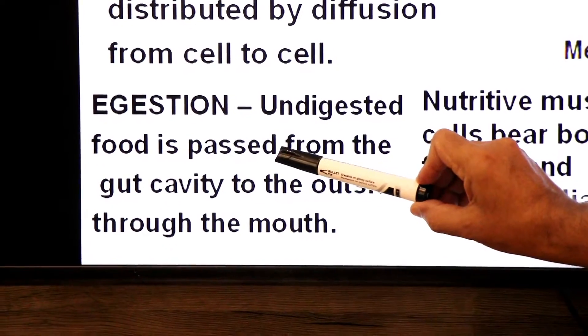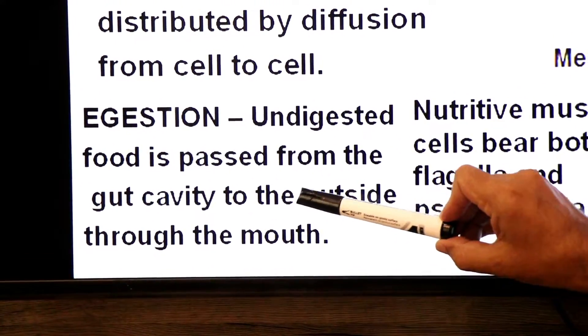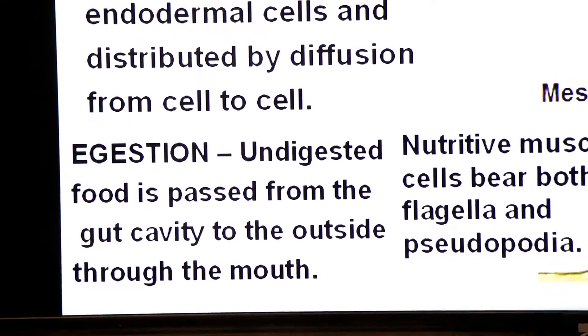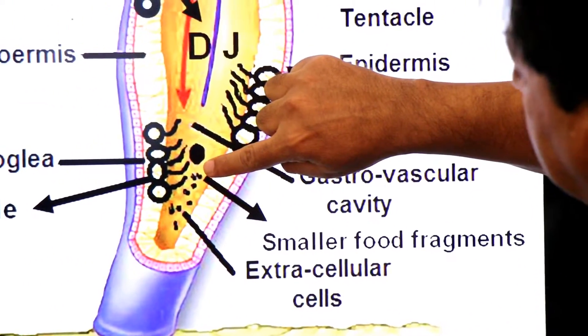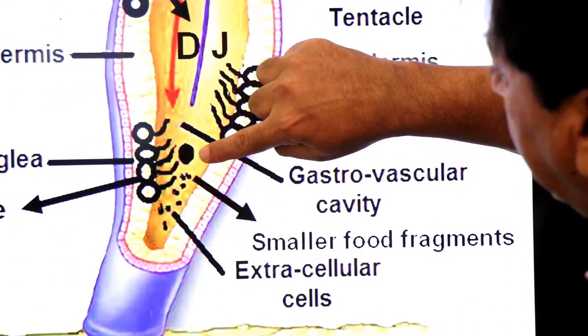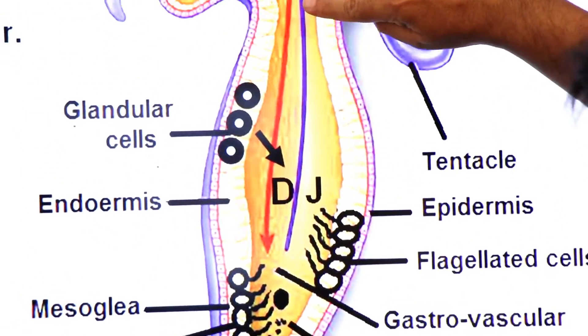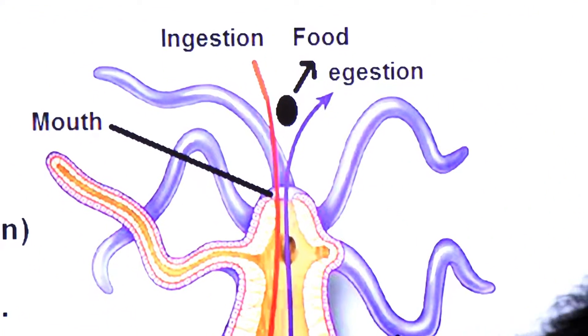Undigested food particles pass from the gut cavity to the outside through the mouth. The undigested food leaves the body through the mouth — a process called egestion. Thank you, dear students. Wish you all the best.